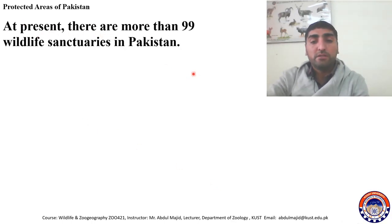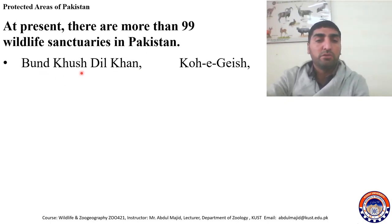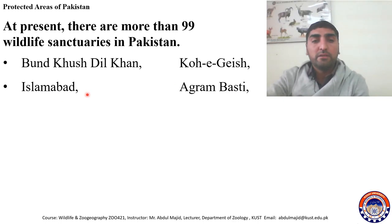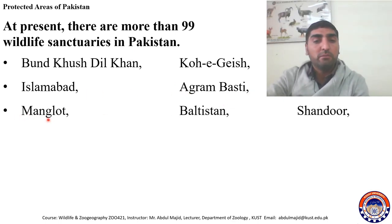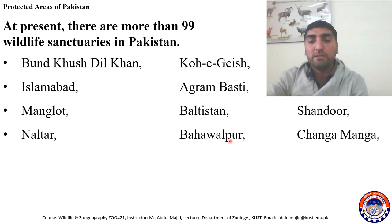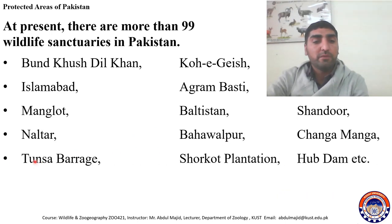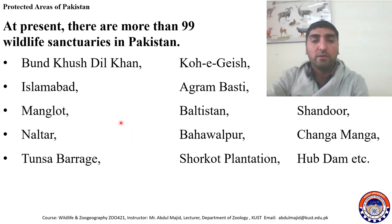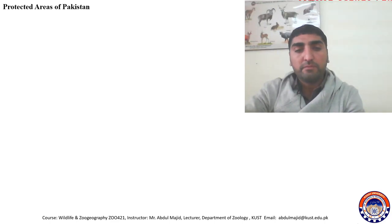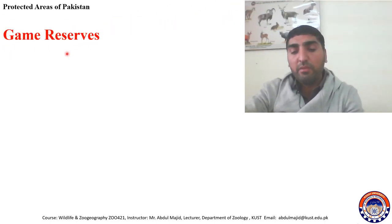According to the book by S.S. Ali, at present there are more than 99 wildlife sanctuaries in Pakistan — the number is now more than 128. Some of them include Bund Khushdil Khan, Kohi Geish, Islamabad Wildlife Sanctuary, Agram Basti Wildlife Sanctuary, Manglot, Baltistan, Shandoor, Naltar, Bahawalpur, Changa Manga, Tonsa Bairaj, Shorkot Plantation, and Hub Dam, among many others. You can also search for the rest on the internet.